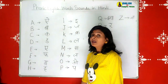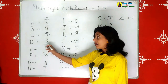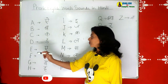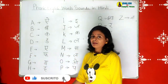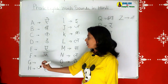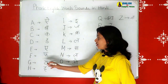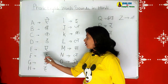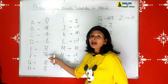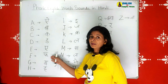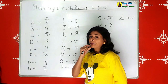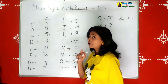Next we come to D. D is for dog. The Hindi phonic sound is 'duh' - dog, dog. The next phonic is E. E is for egg. The Hindi sound is 'eh' - egg. The next is F. F is for flower. The Hindi phonic is 'fur' - you are pressing your lips and then speaking: fur, flower.